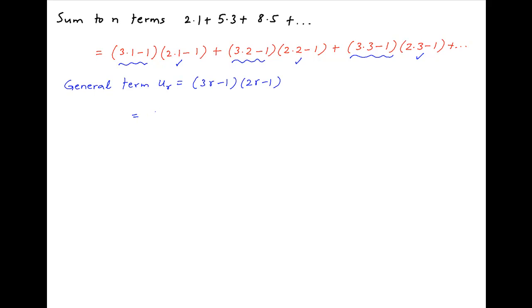Opening this up, Uᵣ is equal to 6r²−3r−2r+1, which is equal to 6r²−5r+1.